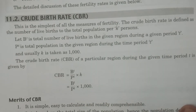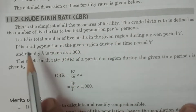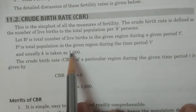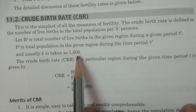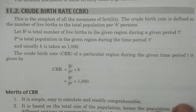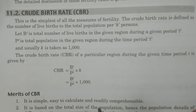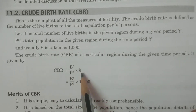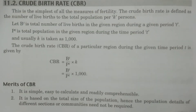K is usually taken as 1000, so CBR gives the birth rate per 1000 persons. BT is the total number of live births in the given region during a given time period T. PT is the total population in the given region during time period T. The formula is: CBR = (BT / PT) × K, where K = 1000.